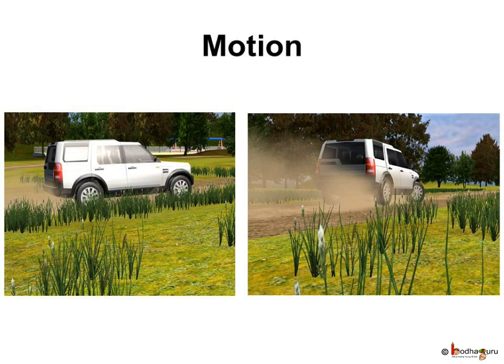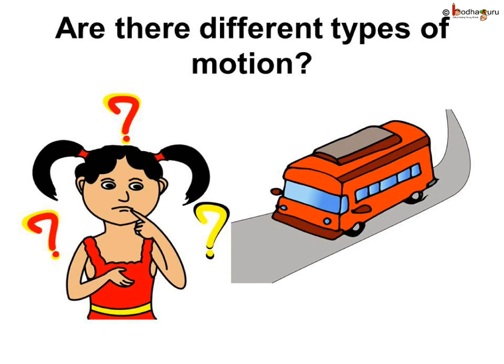Like, when we say a car is moving, it is moving with respect to stationary trees, poles, and buildings on the road. Flying bird, moving car, moving fan, or rotation of earth — all are moving or in motion.